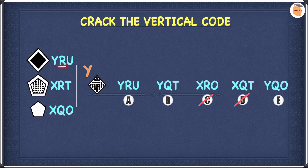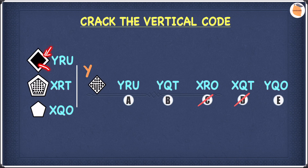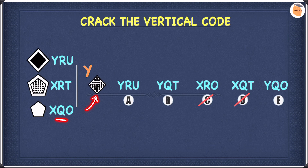Let's move on to the second letter, which is R, R and Q. We have two R's, so there's something common between those two shapes. The only thing that's common is that they both have an outer shape and an inner shape. So if you have an outer and an inner shape the middle letter is R, but if you only have one shape the middle letter is Q. On the right we only have one shape, so the middle letter is Q. We can cross off A because it has YR not YQ, leaving us with B and E.